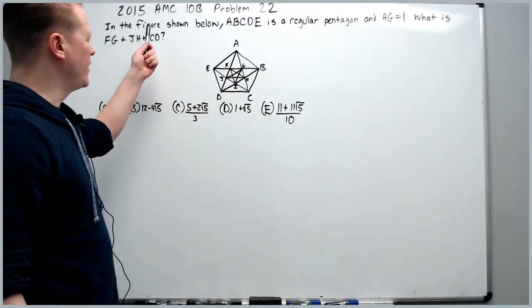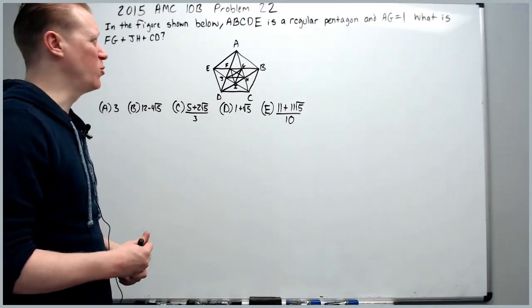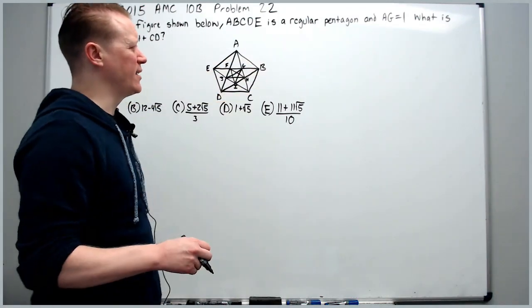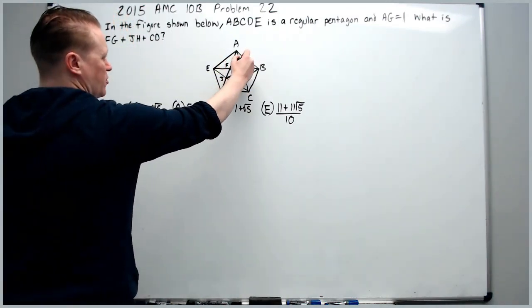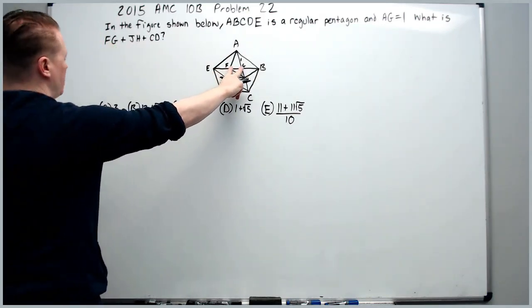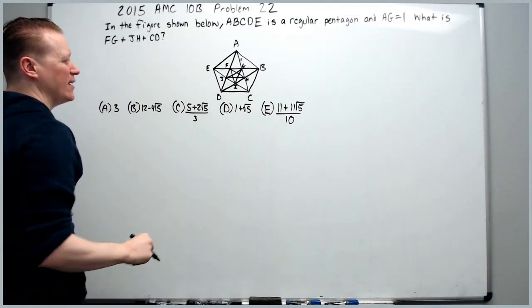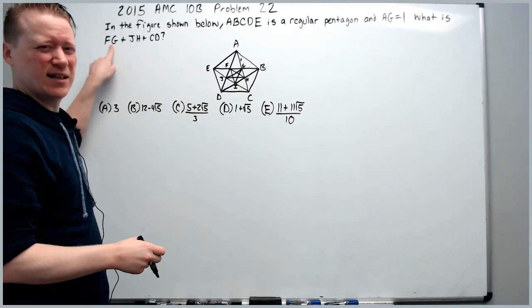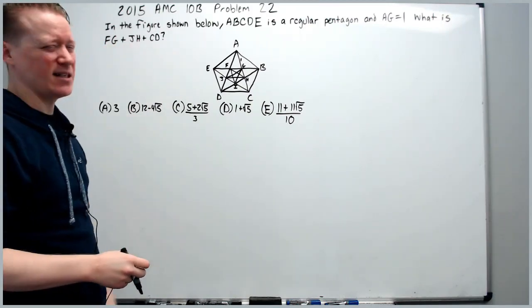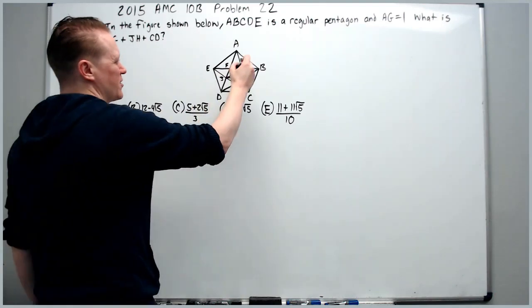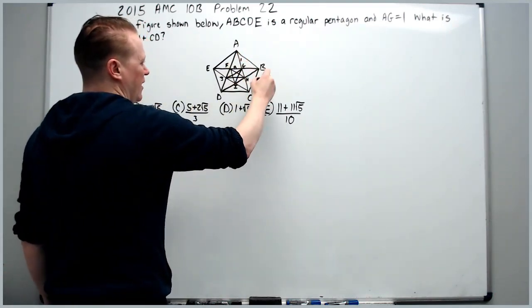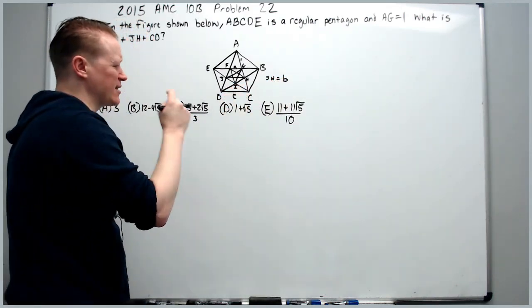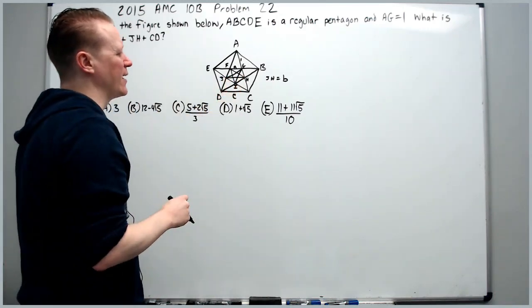In this video we'll do the 2015 AMC10B problem 22. In the figure shown below ABCDE is a regular pentagon and AG is equal to 1. What is FG plus JH plus CD? So we need to figure out how to progress in this problem. We probably don't want to refer to these lengths as FG, JH, and CD. So let's just give them letters. We'll say FG is A. We'll write on the side JH equals B and CD can equal C. So we have A, B, and C for these side lengths.